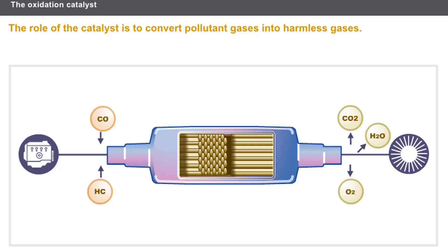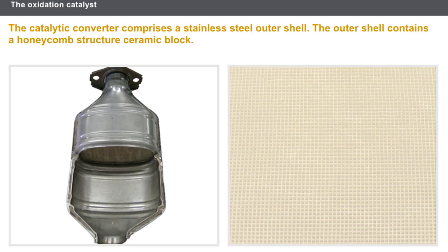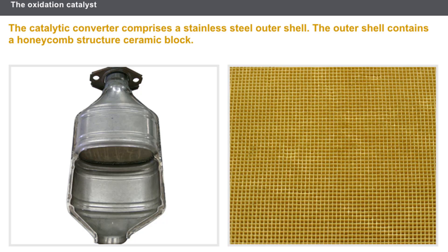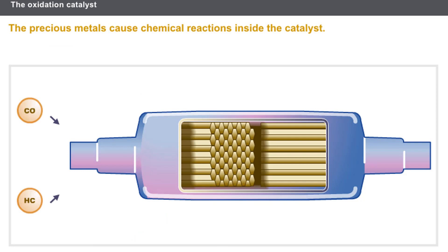Some vehicles are equipped with a pre-converter to improve the control of emissions. The catalytic converter comprises a stainless steel outer shell containing a honeycomb structure ceramic block. The honeycomb structure increases the contact surface between the exhaust gases and the precious metals, which cause chemical reactions that convert pollutant gases into harmless gases.